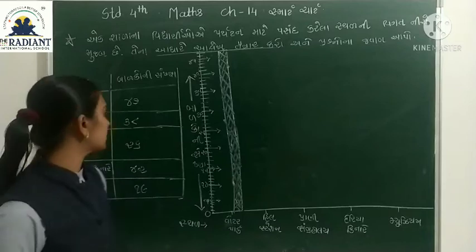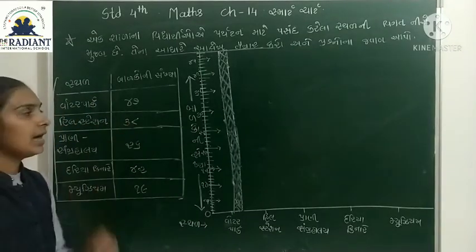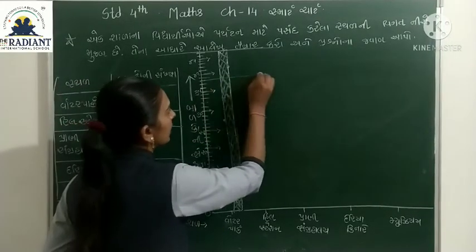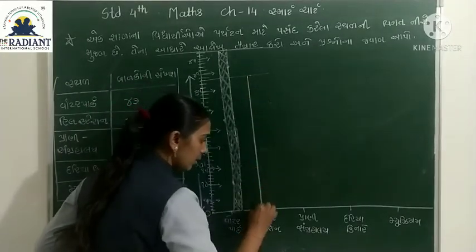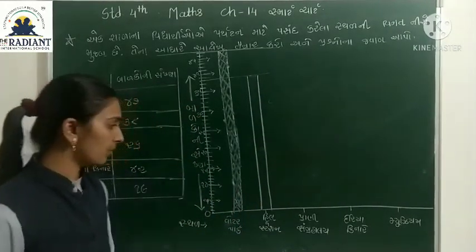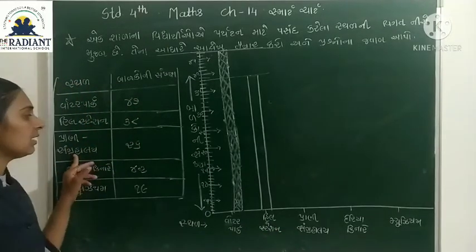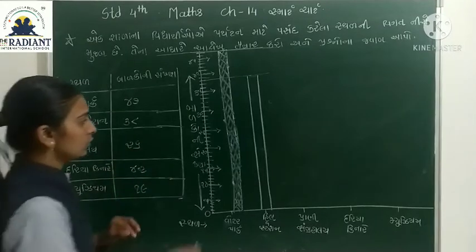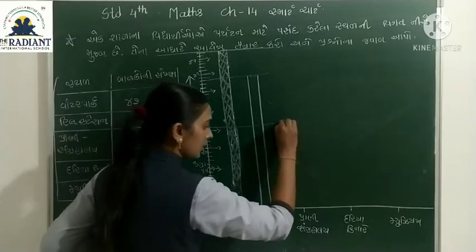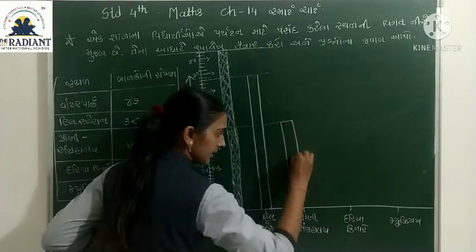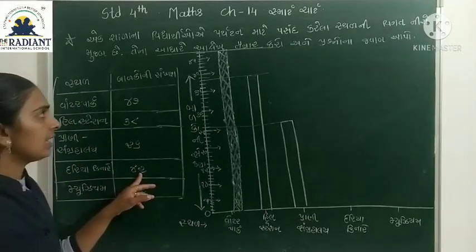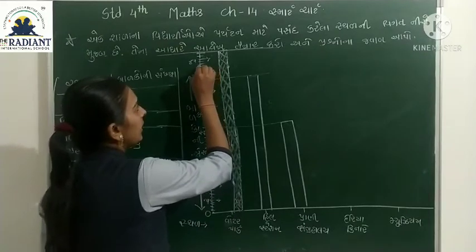હવે બીજું જુઓ - હિલ સ્ટેશન. હિલ સ્ટેશન બારોકોની સંખ્યા અડ્ત્રીસ છે. 35 થી 38 - અડ્ત્રીસ. પ્રાણી સંગ્રહાલય - ત્યાં જનાર બારોકોની સંખ્યા કેટલી? 25 ઉપર 26 - છવ્વીસ. દર્યા કિનારે - 42. ચાળીસ, એકતાળીસ, 42.